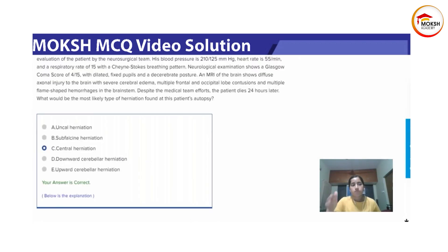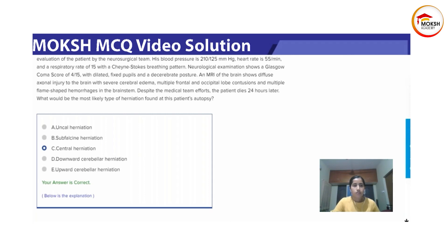With downward cerebral herniation, the medulla is also getting compressed downwards, so think immediately of cardiorespiratory compromise — the patient will have respiratory as well as cardiac dysfunction. The patient has neither of that in this case. He does have a changed breathing pattern, but that does not relate to it, so you can rule that option out.